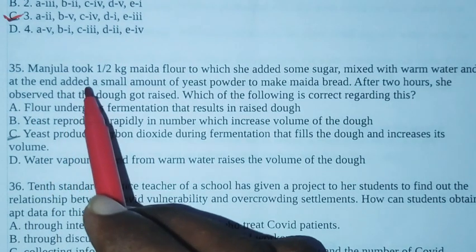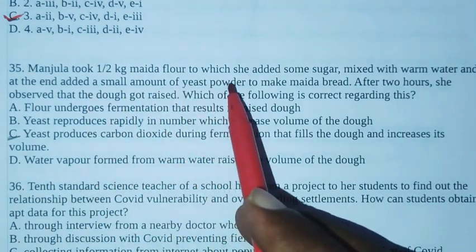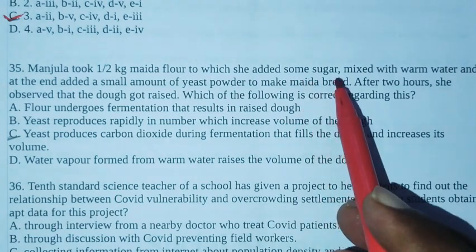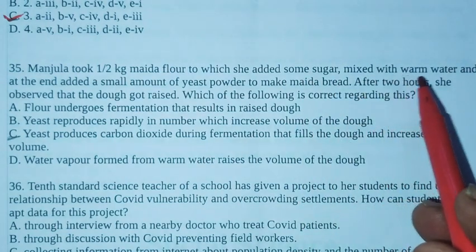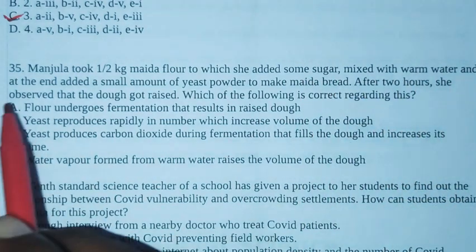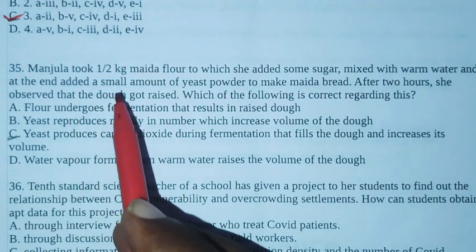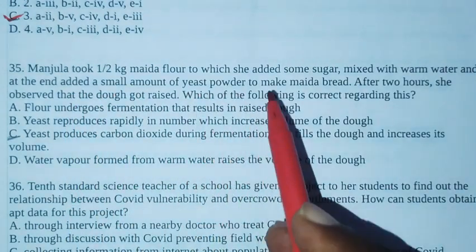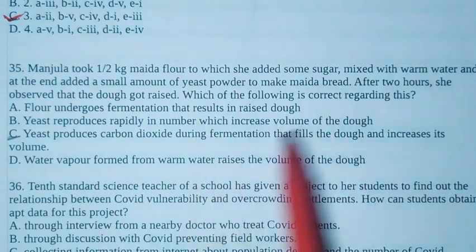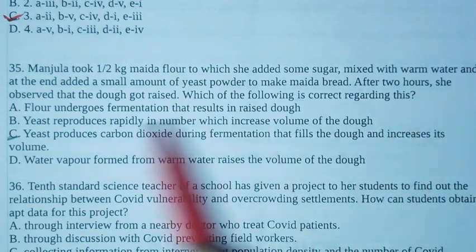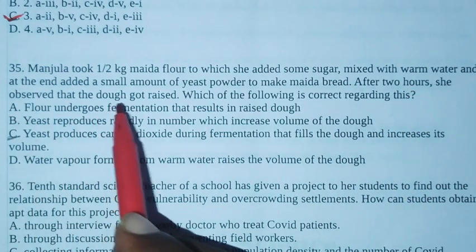Question number 35. Manjula took half kg maida flour to which she added some sugar mixed with warm water and at the end added a small amount of yeast powder to make maida bread. After two hours she observed that the dough got raised.